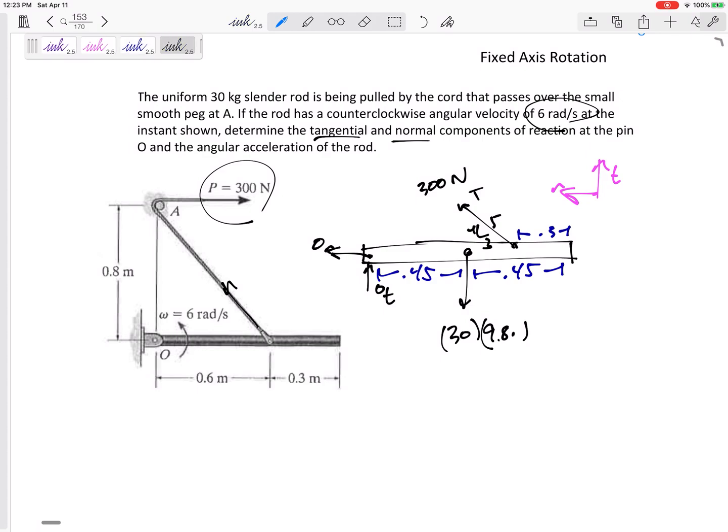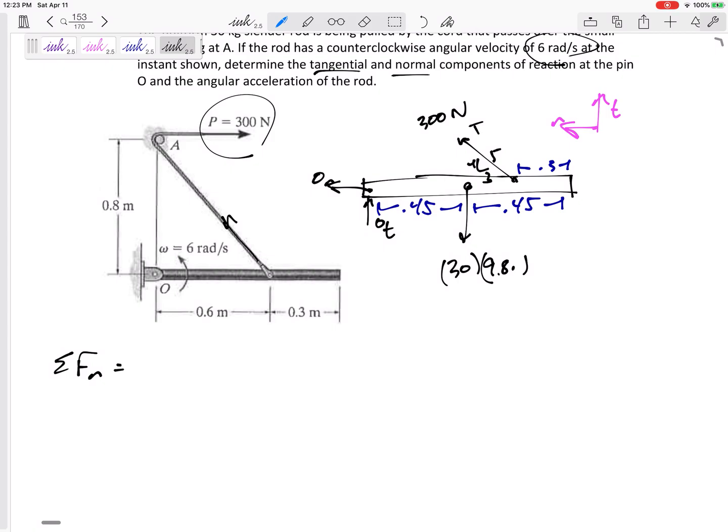Now, let us sum the forces in the normal direction. Normal is to the left. O normal and then the 3 fifths component of T equals mass times A normal. What is A normal? A normal is R omega squared. What is R omega squared? R is the distance that point G is from the center of rotation. In this case, 0.45 is R. And then omega squared right there.